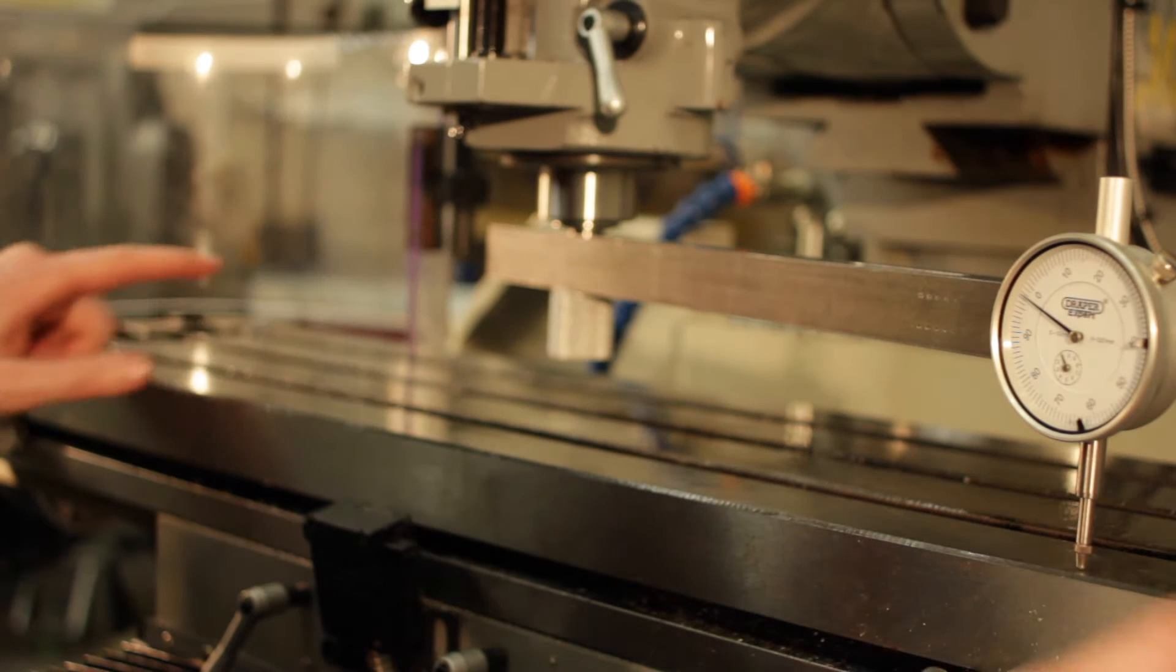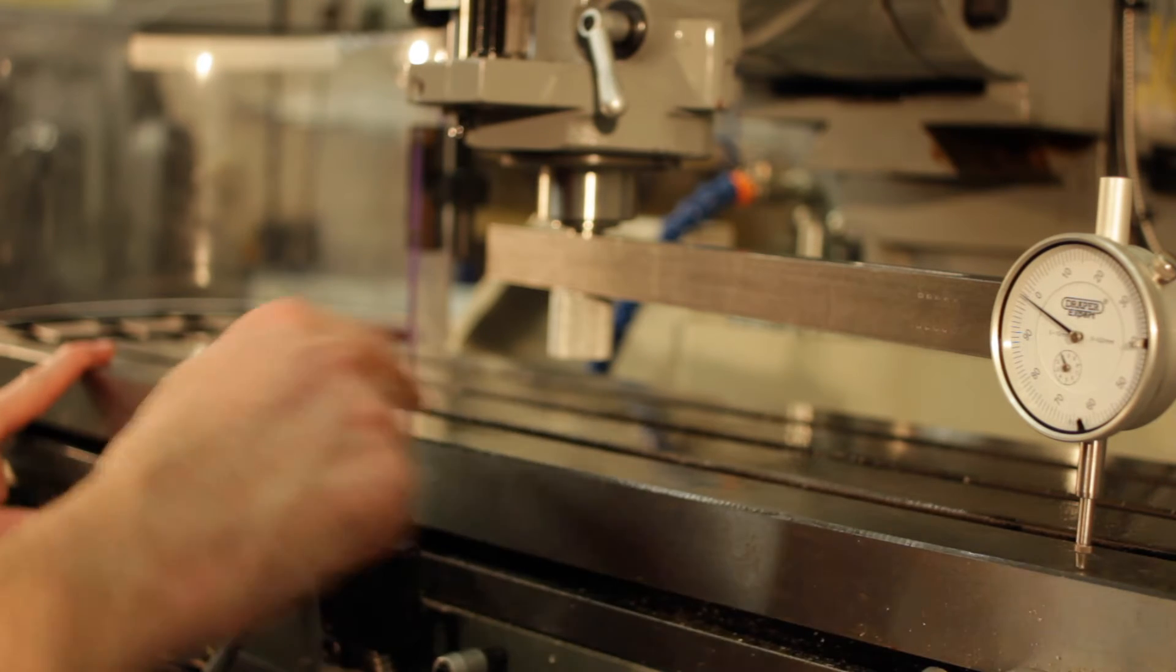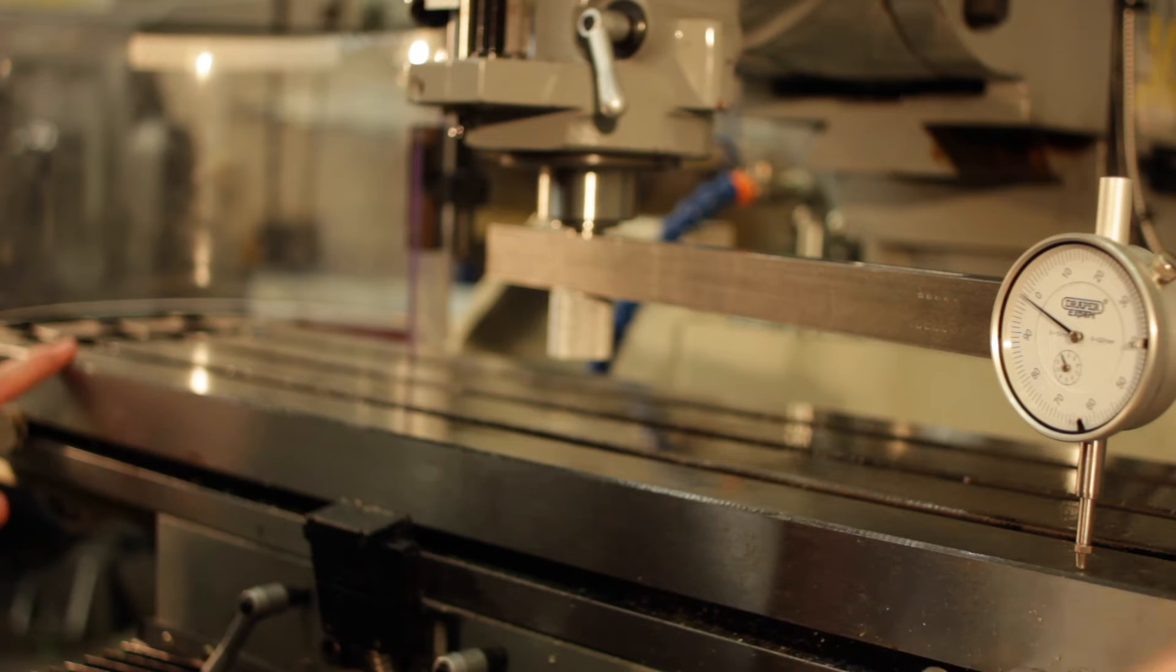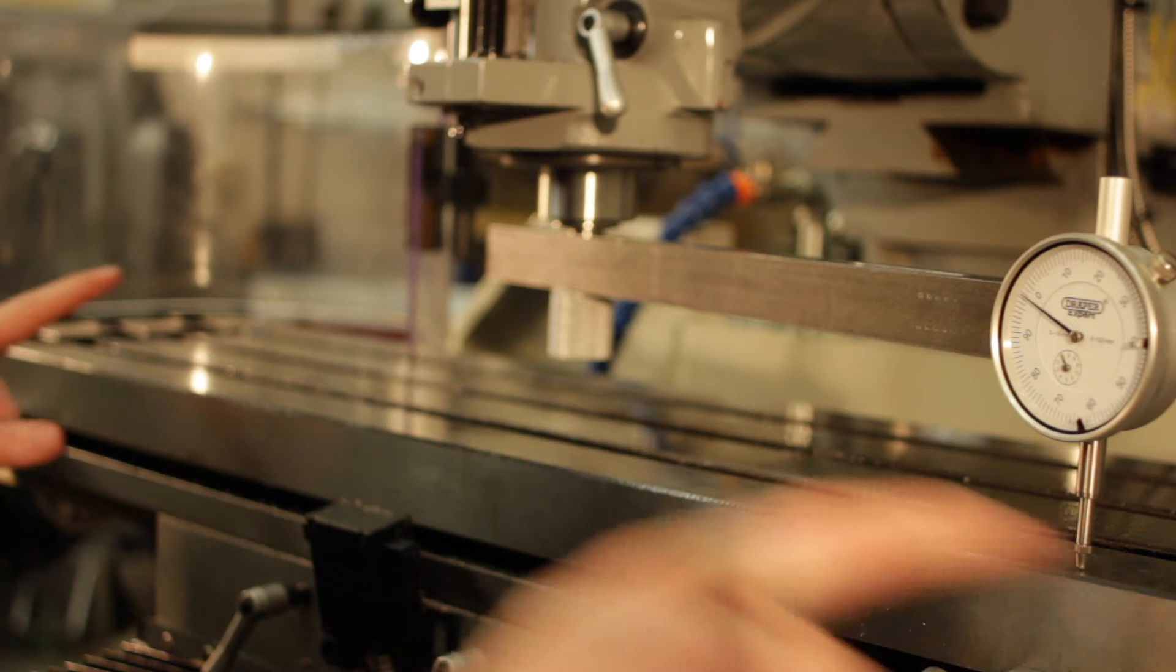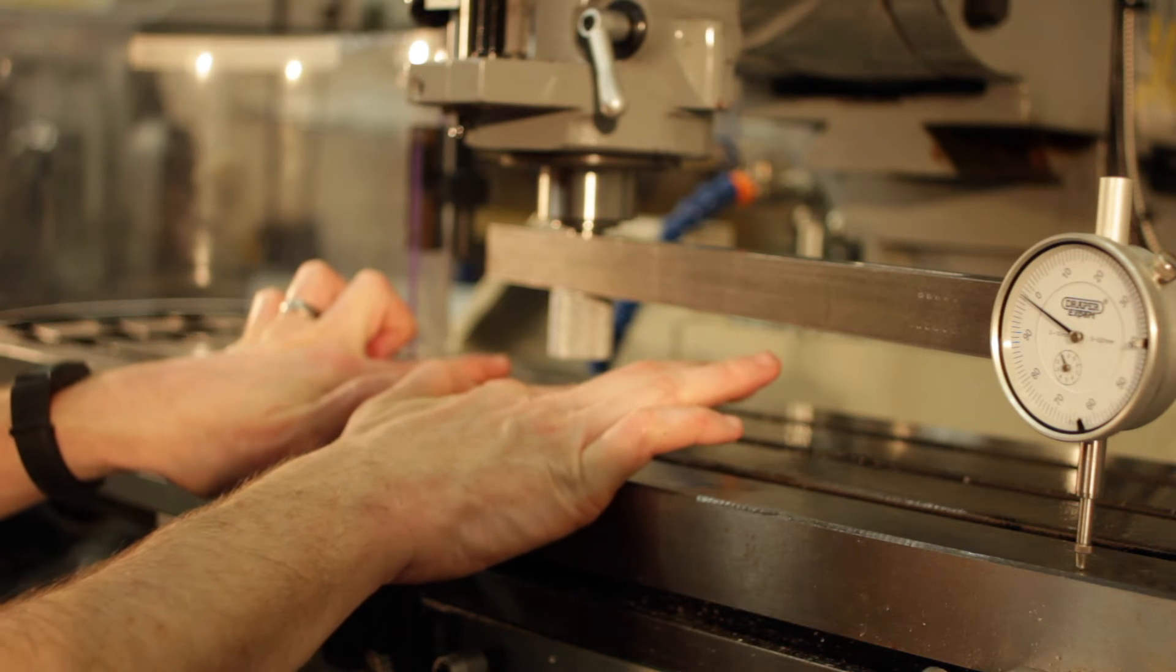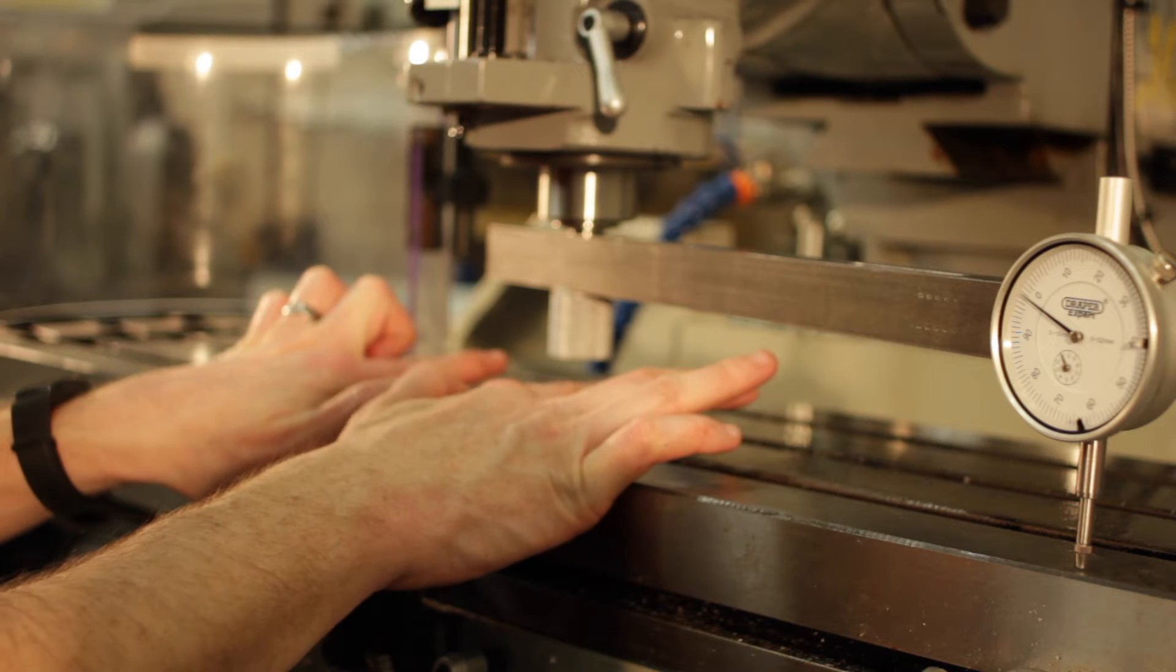So you're taking the measurement across a wide area of the bed. If you're getting a good reading across this sort of machine envelope, then you can bet yourself that the small area that you generally use on the job is going to be absolutely plumb.